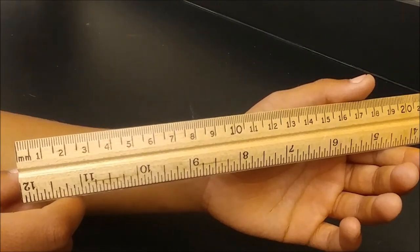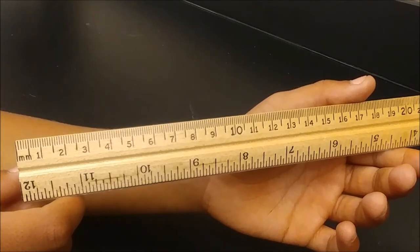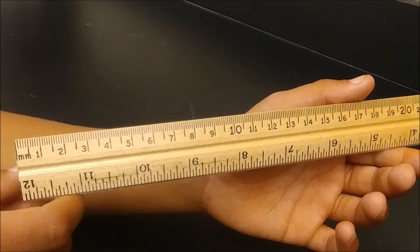C is 5 millimeters or a half a centimeter. There are 10 lines in between each centimeter mark. These are the parts to a ruler.